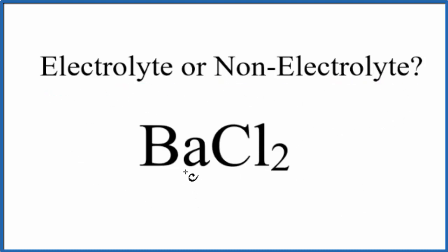We need to first look and see what type of compound we have to figure out if it's an electrolyte or non-electrolyte. Barium is a metal and chlorine is a non-metal, so we have a metal and non-metal, which means this is going to be an ionic compound.